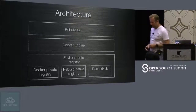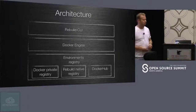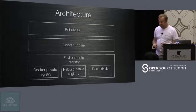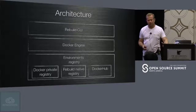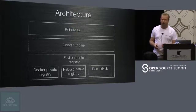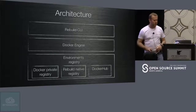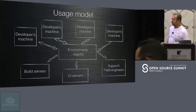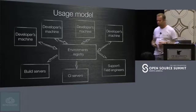Let's look at the architecture. We use the rebuild CLI to interact with rebuild, and this is the gateway for developers or for your CI/build server scripts. We also have something called an environment registry, and we can work with several registries: Docker Hub, Docker private registry, and our own rebuild native registry. We leverage Docker engine to run and manage the container images. The usage model is a centralized environment registry for either your project or organization, accessible by developers, build servers, CI servers, and support or field engineers.